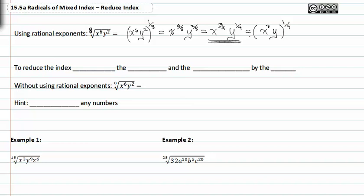If you do, you've done it correctly. Since we now know what our index is, once again we can rewrite it as the fourth root of x to the third, y to the first.